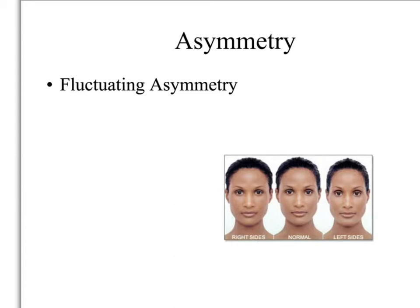You can see this in human preferences. Humans tend to prefer faces that are symmetrical. This face has the right sides duplicated, and this face has the left sides duplicated. Humans in general would prefer either the face on the right or the face on the left because it's more symmetrical than the face in the middle. Those preferences are to a point — we don't prefer faces that are perfectly symmetrical, just those that are more symmetrical than others.